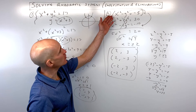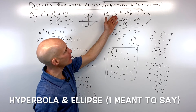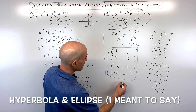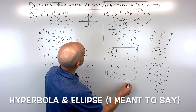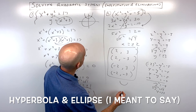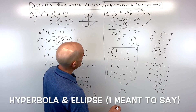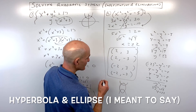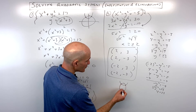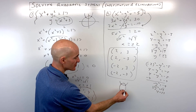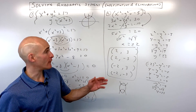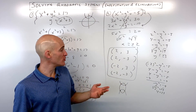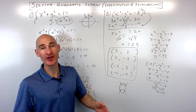The reason we get four solutions is that we have a hyperbola and an ellipse. In a rough sketch, the hyperbola and ellipse can cross at four points — four points of intersection. In example 1 there were only two points of intersection. Depending on the curves, you could have 4, 3, 2, 1, or even 0 intersections — they might not intersect at all.